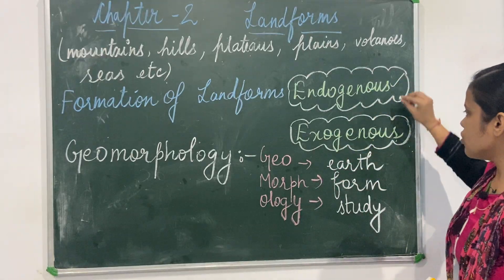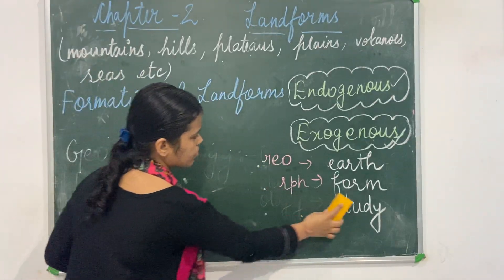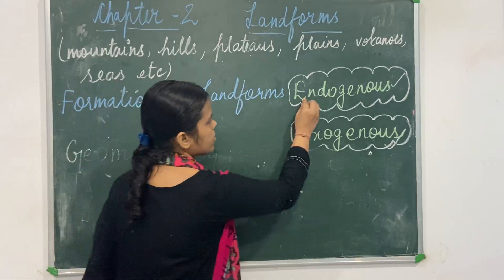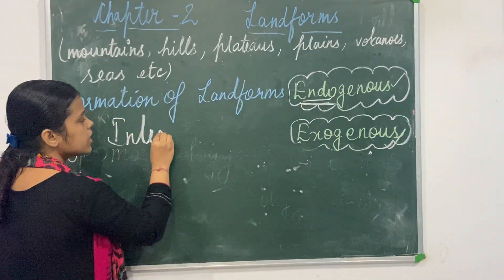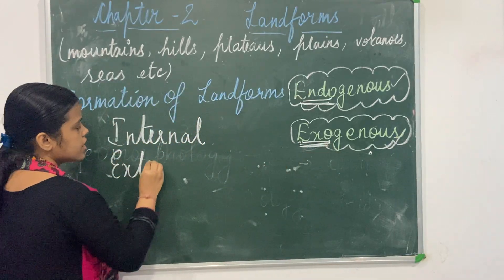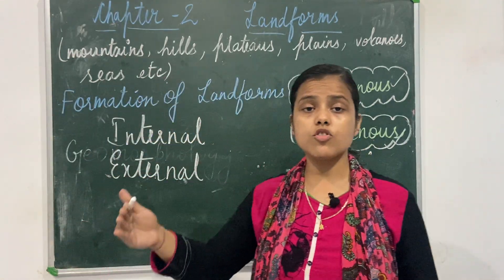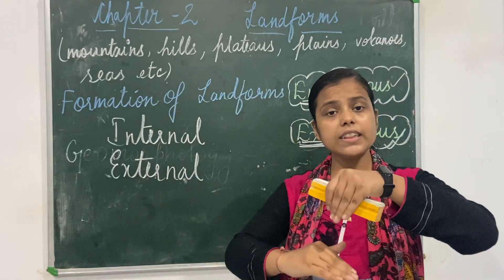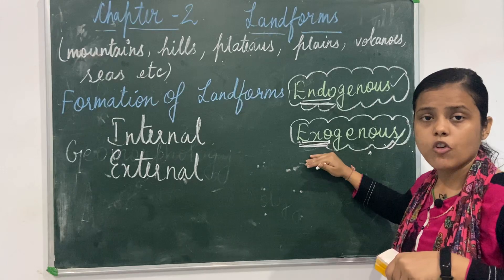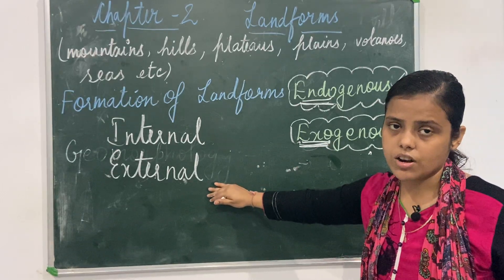Coming to our points, endogenous and exogenous: in simple words, endogenous means internal — internal forces. And exogenous means external — external forces. The landforms which are due to internal forces taking place inside the earth are known as endogenous, and the forces that cause different types of landforms to be formed on the surface of the earth are known as external forces, that is exogenous.